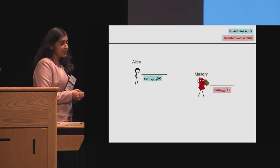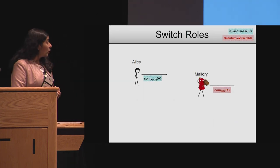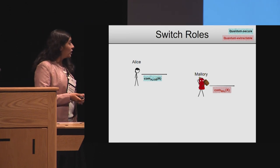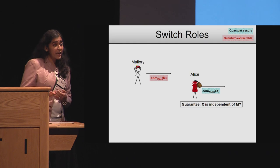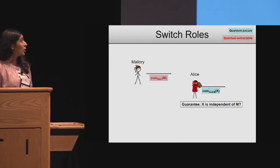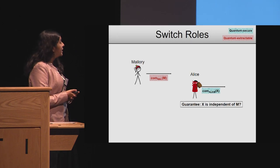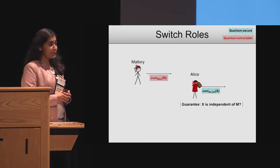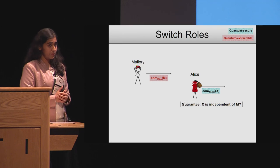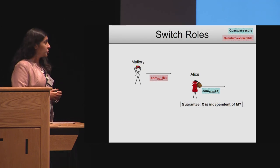That was the case when Mallory was malicious. What if Alice and Mallory switch roles and Alice becomes the bad guy? Note that we had a commitment for Alice that was quantum secure and one for Mallory that was quantum extractable. This guaranteed that Mallory's message is independent of Alice's message, but not the other way around. So how do we guarantee security in this reverse situation?